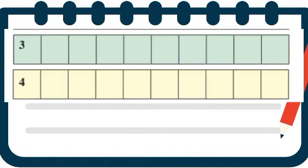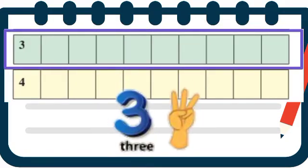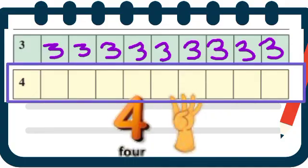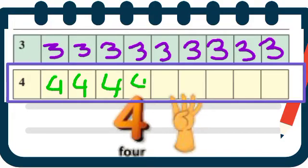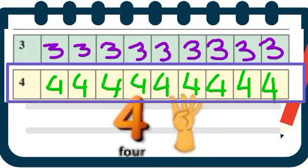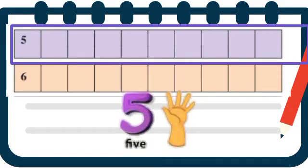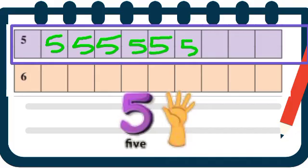Next, this is 3. 2 and 1 make 3. Let's write number 3 — 3 haa aankha lihniyacha sarav kara. Number 4: 3 and 1 make 4 — 3 aani ek milun bantil 4. Chala tar 4 haa aankha lihniyacha sarav karu ya. Let's do practice writing digit 4. Next, 4 and 1 make 5. This is digit 5 — 5 aankha lihniyacha sarav kara.